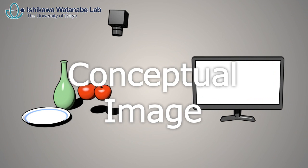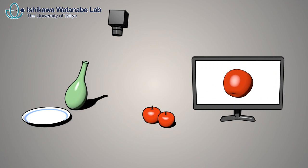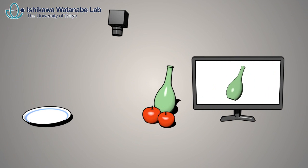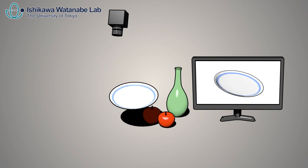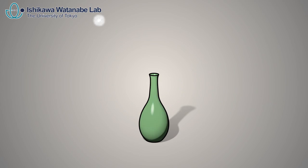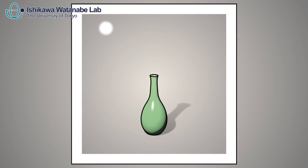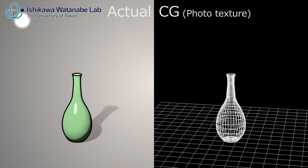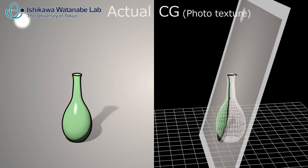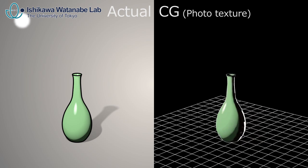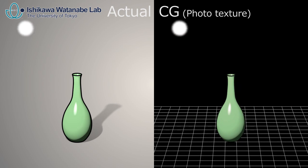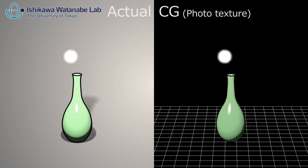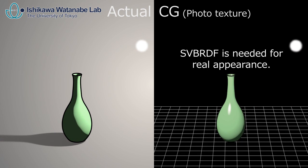The aim of this research is to realize high-speed measurement of appearance of a real object. Because a general photograph expresses the appearance from a specific viewpoint and at specific lighting, when the viewpoint or lighting is changed, it cannot avoid inconsistency in computer graphics rendering.